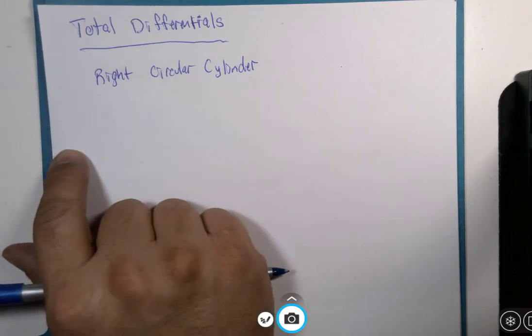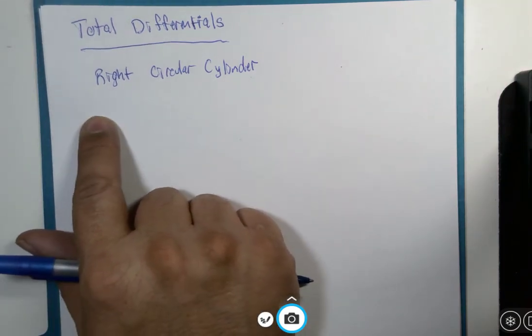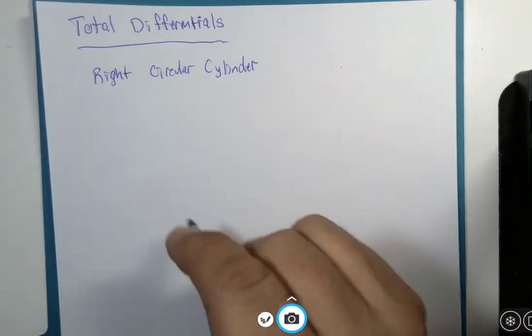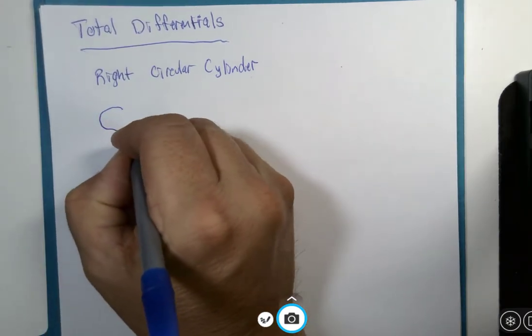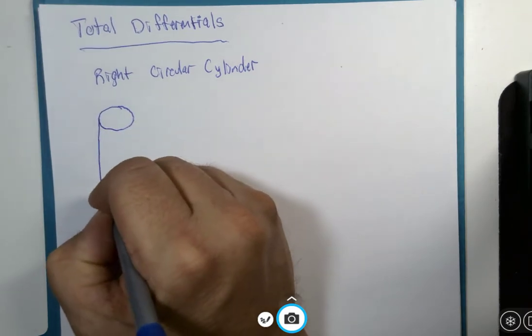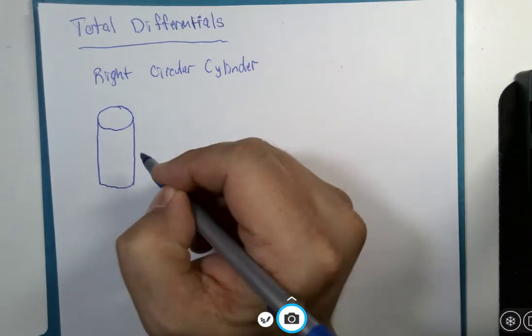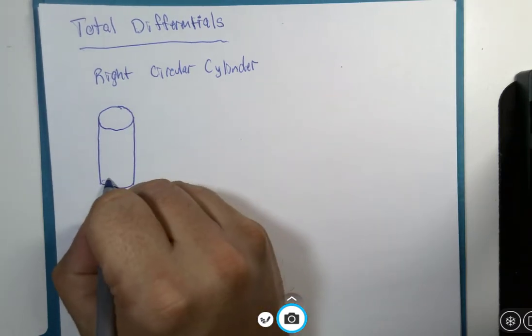Okay, let me show you a different example with the total differential in mind. That involves a right circular cylinder. That cylinder is a fairly simple shape with more than one variable in it.